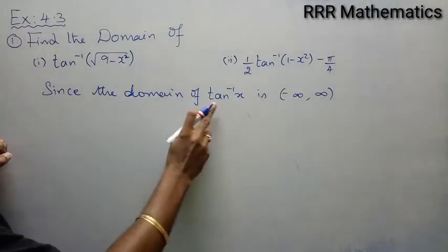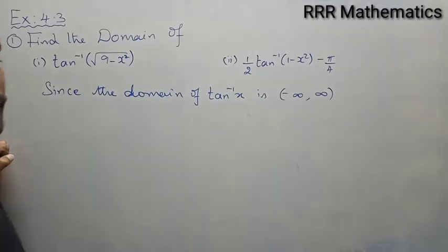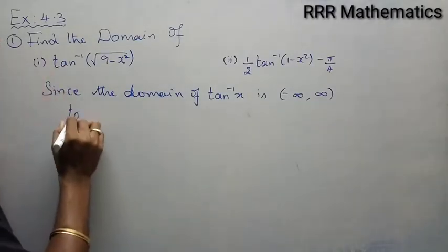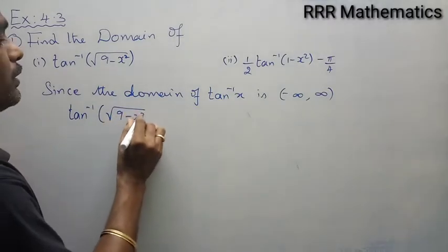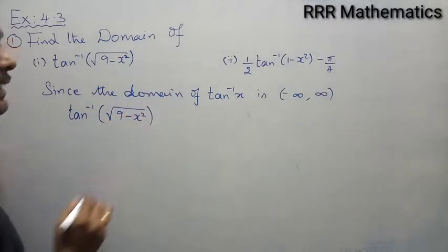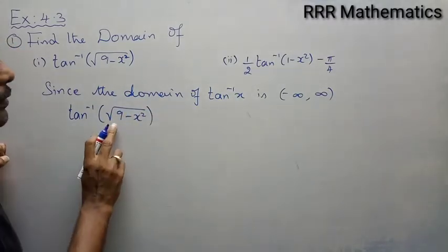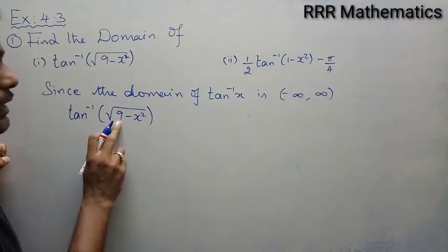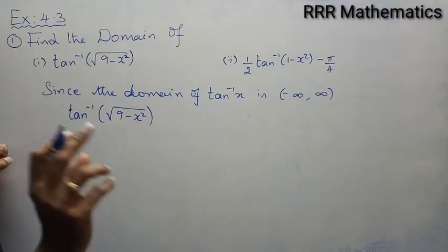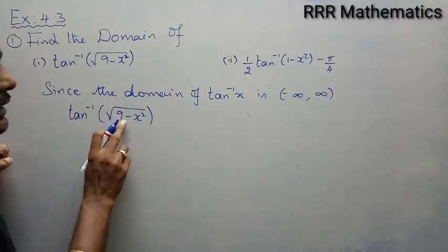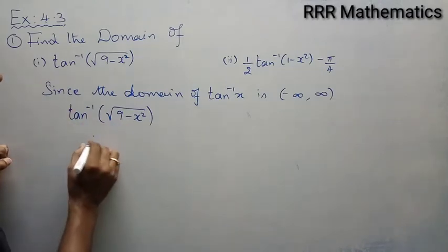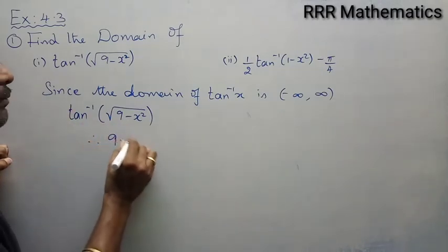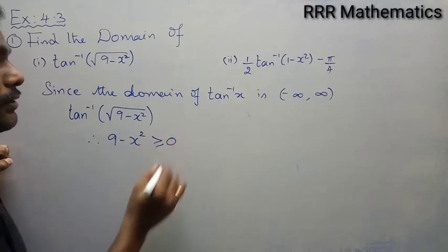Since the domain of tan inverse x is minus infinity to plus infinity, in this case we have tan inverse of square root of 9 minus x squared. For the square root, the value inside must be positive — if it is negative, it will be imaginary. So strictly, 9 minus x squared must be greater than or equal to 0.